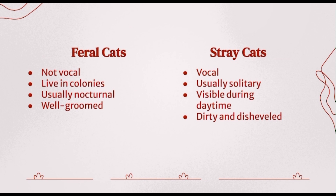Before you capture a cat, here are some big differences you may see when seeing a cat outside. Feral cats tend to not be very vocal — they are very quiet and skittish. They want to hide away from people and tend to live in colonies. They are usually nocturnal and are very well groomed with sleek coats. Stray cats, however, are very interested in people and can be very vocal. They are usually solitary and not as afraid of people, so they are usually visible during the daytime. They tend to be dirty and disheveled, not fully knowing how to take care of themselves in their environment.